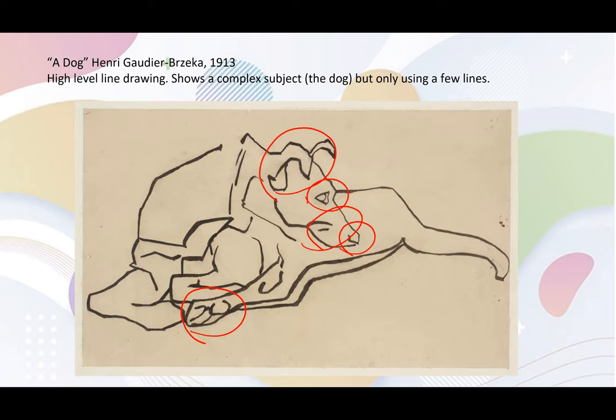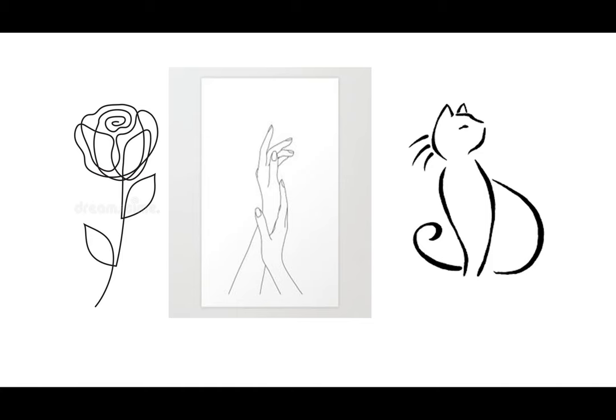I challenge you to draw this dog using only a few lines. It looks simple, but it requires a lot of technique. These images are easier to capture since they show fairly simple shapes using lines. Start with a simple subject such as flowers or outlines of a cat, dog, rabbit, etc. I encourage you to do this at home. Just as a heads up, you will have homework at the end of this lesson, so do not spend a lot of time on this.